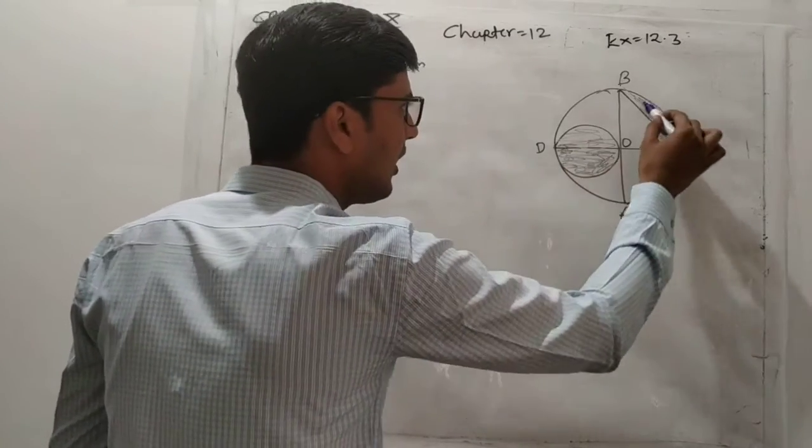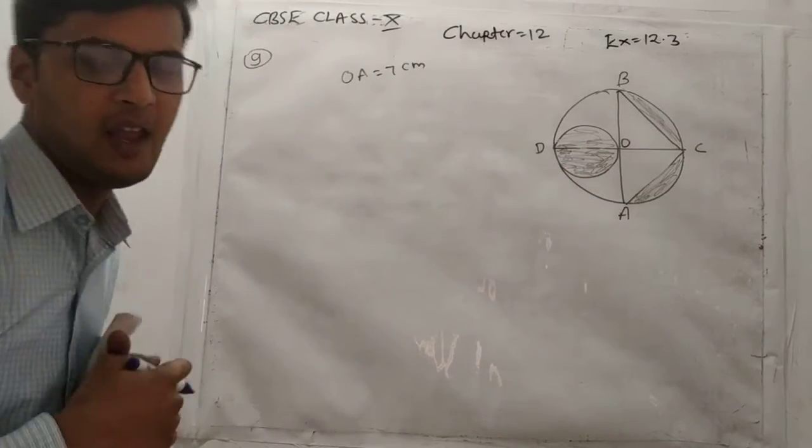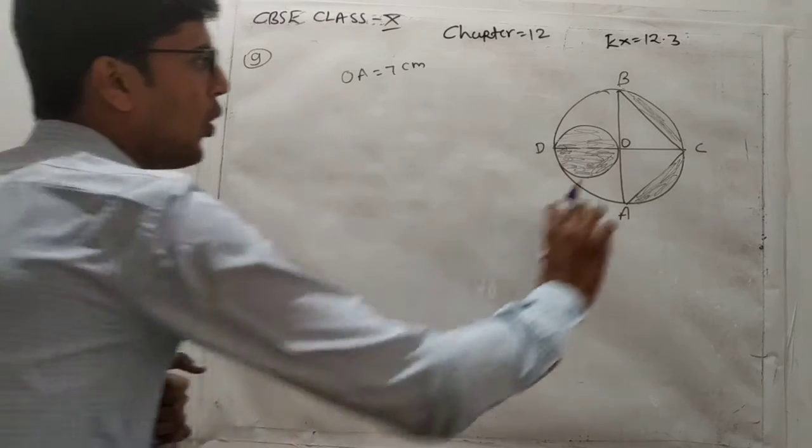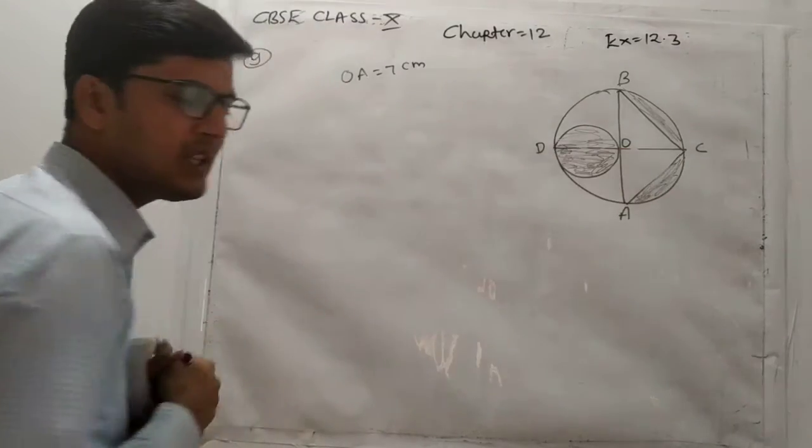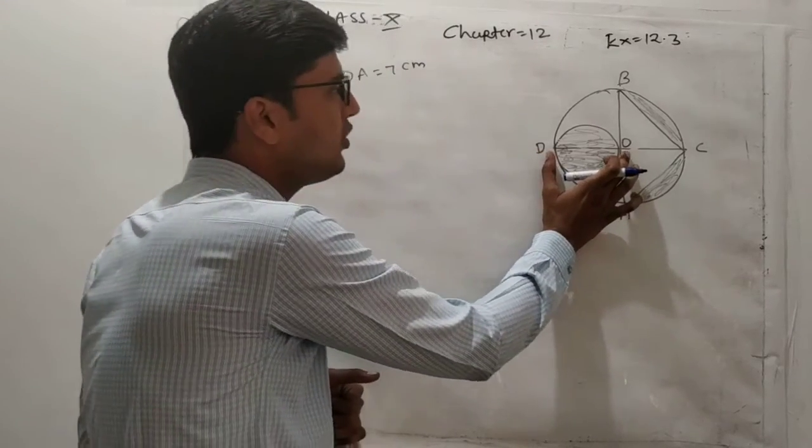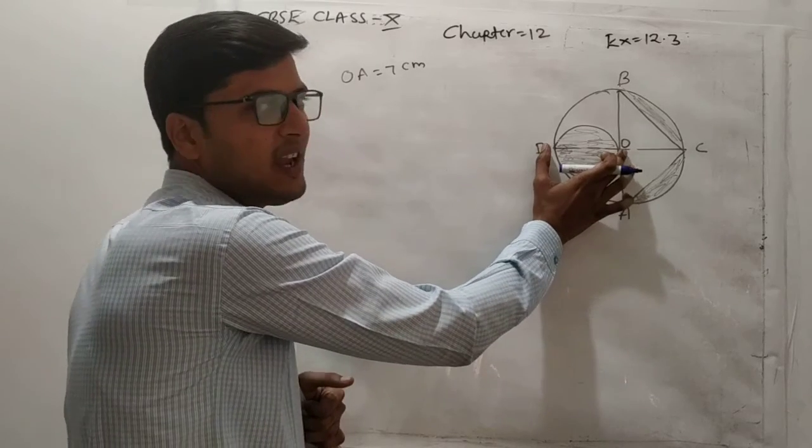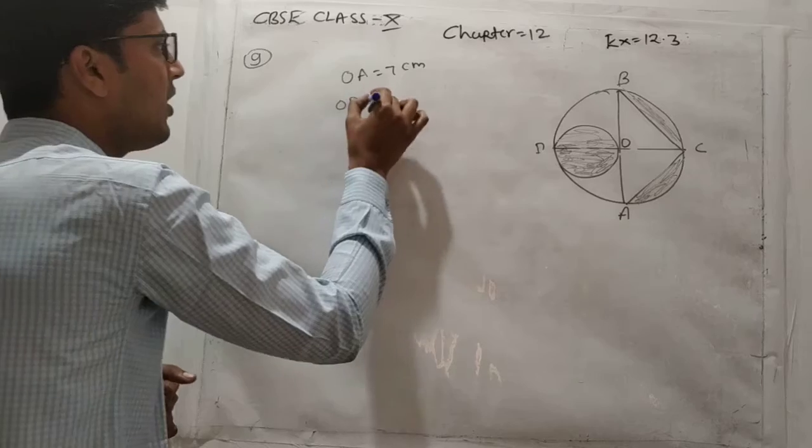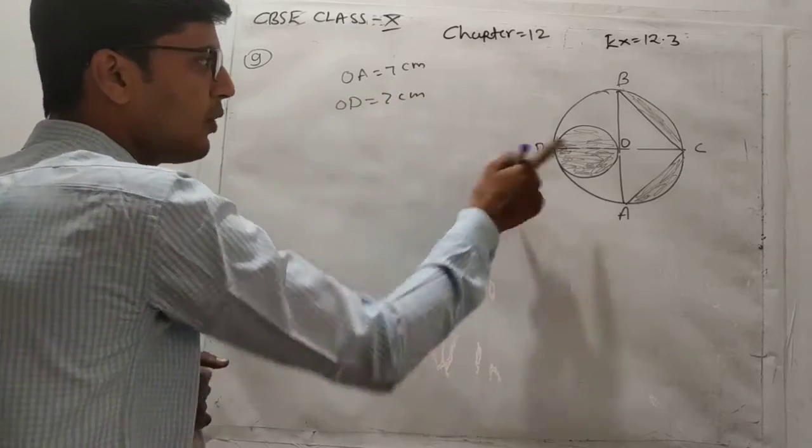The shaded region means area of the smaller circle plus two segment portions. So find the area. If OD is equal to 7, then the radius is equal to 7 upon 2.